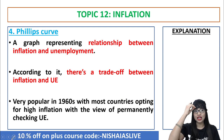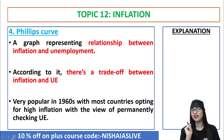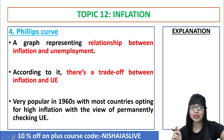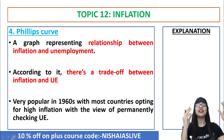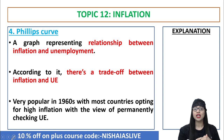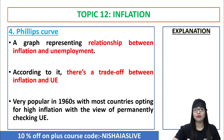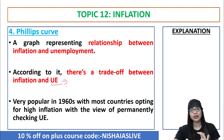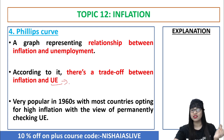The next important topic is the Phillips Curve. The keyword 'curve' represents a graphical representation — specifically a graphical representation between inflation and unemployment, which is called the Phillips Curve. According to this, there is a trade-off between inflation and unemployment (UE). When there is a trade-off between these two factors, that relationship is called the Phillips Curve.